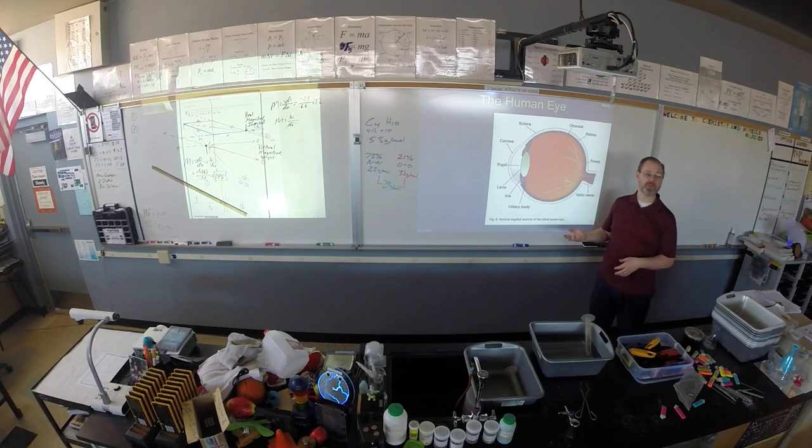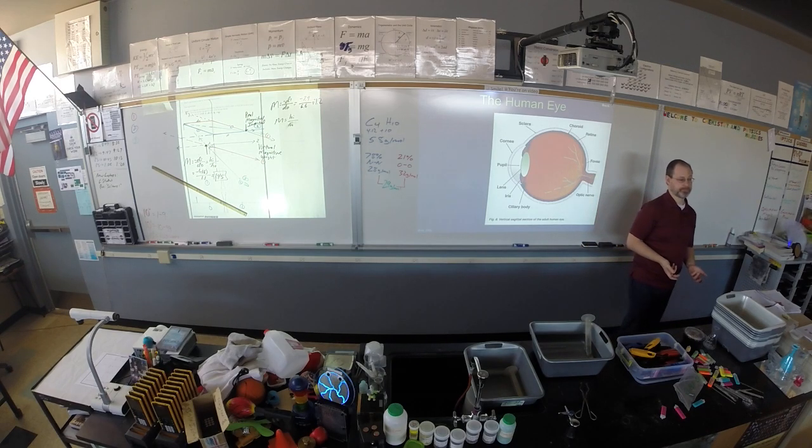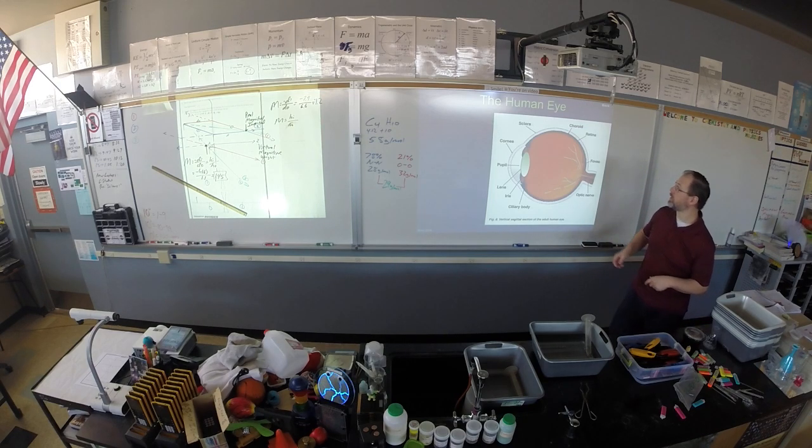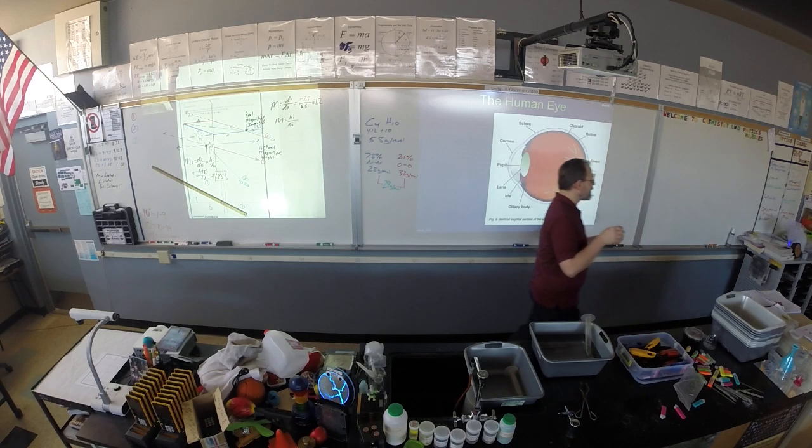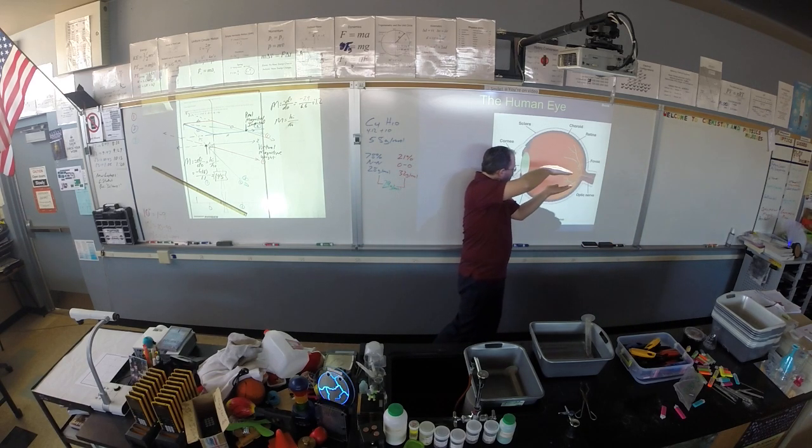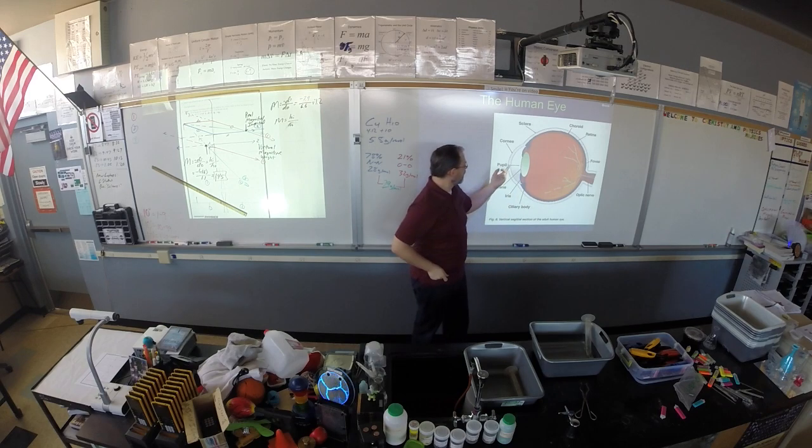Now, is this a converging or a diverging lens? Converging. Because it's fatter on either side. So the light comes in and then it converges at the lens.